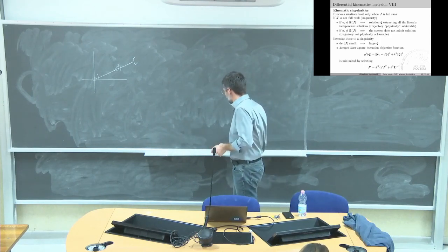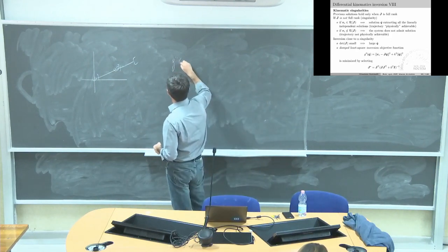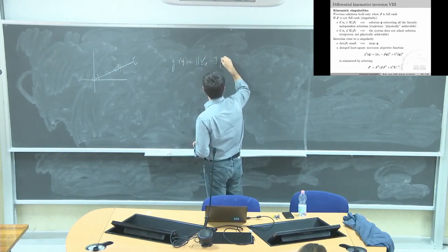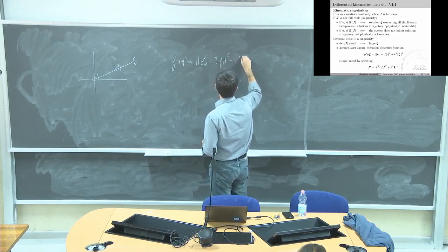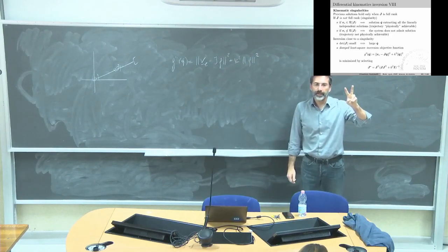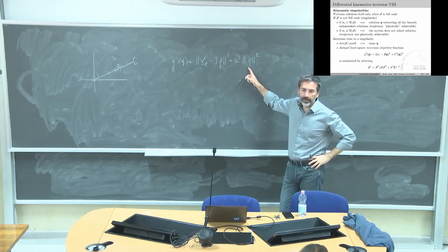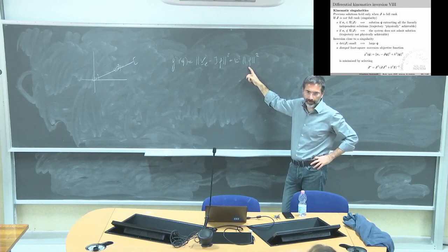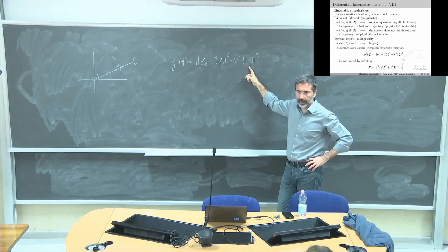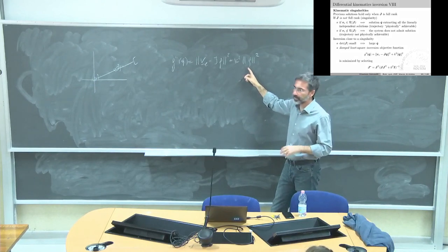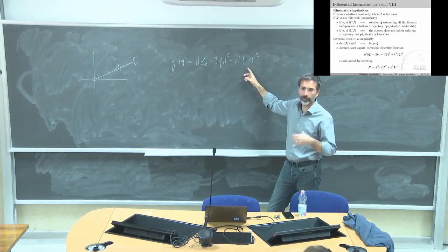If I define this function to be minimized, I have two different requirements. The first is Q dot transpose Q dot — simply written in a different way, in order to match the textbook notation. I want to have Q dot small.